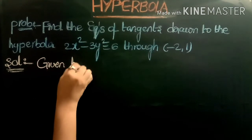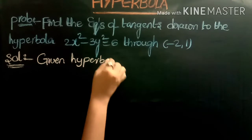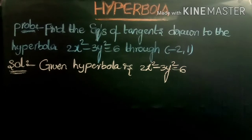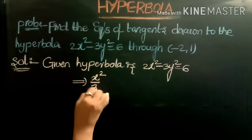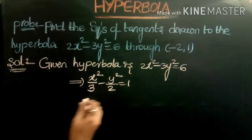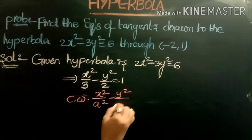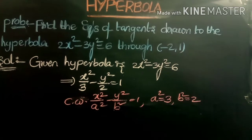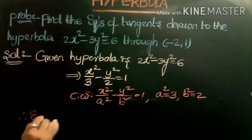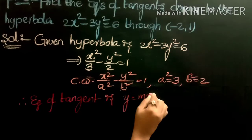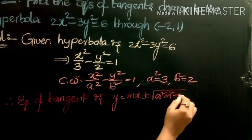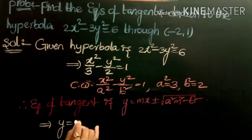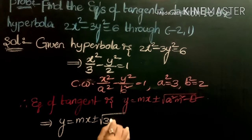The given hyperbola is 2x squared minus 3y squared equals 6. Dividing by 6: x squared by 3 minus y squared by 2 equals 1. Comparing with standard form, a squared equals 3 and b squared equals 2. The equation of tangent with slope m is y equals mx plus or minus square root of (3m squared minus 2).